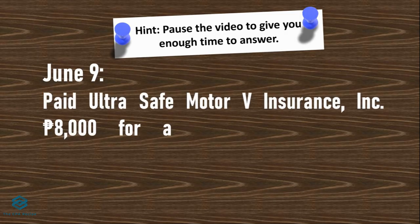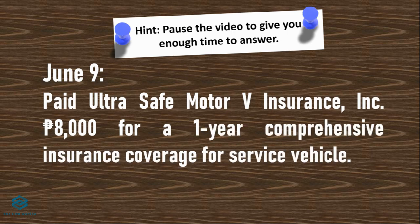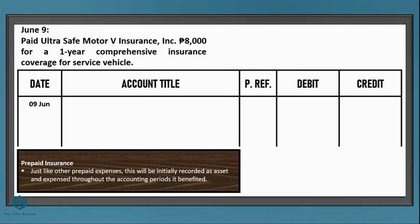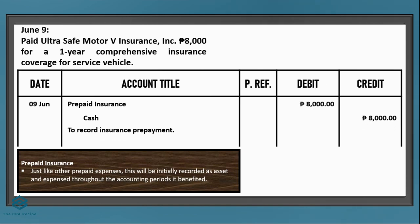Also on June 9, Brainwash Laundromat paid UltraSafe Motor V Insurance Incorporated 8,000 pesos for a one-year comprehensive insurance coverage for the service vehicle we just bought. Let's put June 9 under the date column. Since the insurance is for one year, it's not yet an expense — you'll consume it as the one-year period lapses. So this is an asset as of June 9. Debit prepaid insurance — insurance paid in advance. Since we paid cash, credit cash. The amount is 8,000 under debit and credit columns.